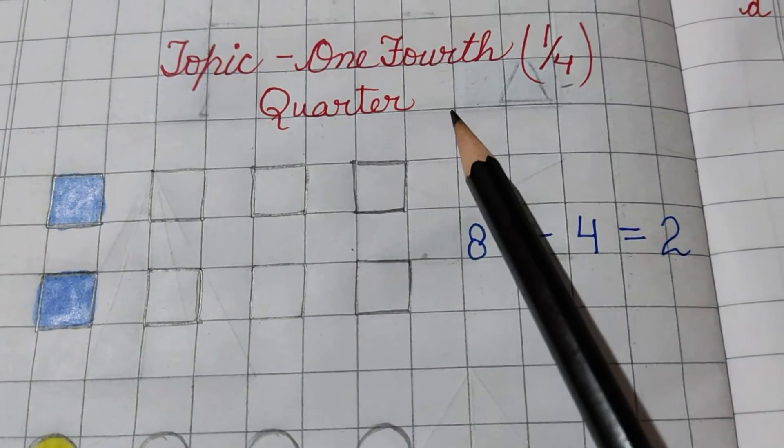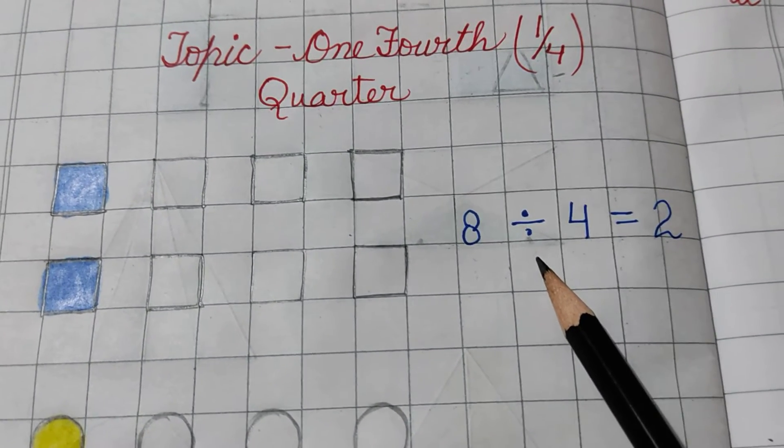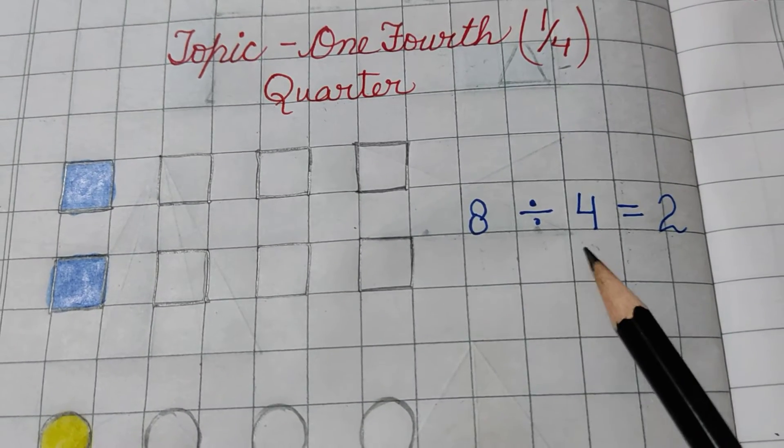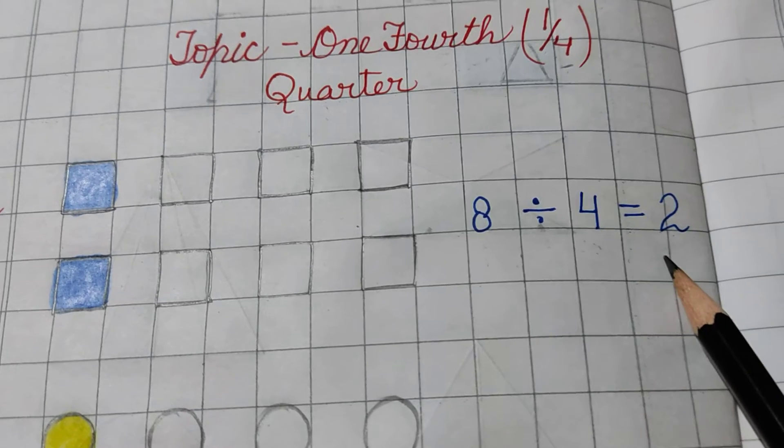As we are doing one-fourth, so we have to divide it by 4. So, I have put the sign of division here, then divide by 4 to get 8, we have to read the table of 4. 4 times 2 is 8. 2 is the answer.